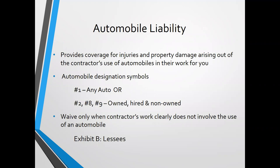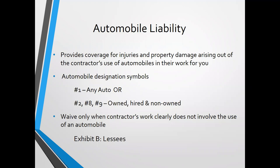Automobile liability is coverage for the use and operation of an automobile. We typically require any auto liability coverage — designation symbol number one — which provides coverage for any auto. Many carriers won't write that anymore, so we ask for owned, hired, and non-owned, which on an automobile policy would be symbols two, eight, and nine. That combination provides coverage for almost any automobile those employees operate, with only small gaps.